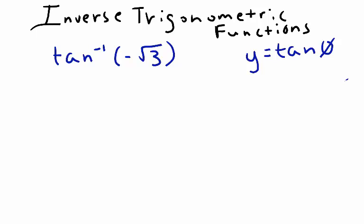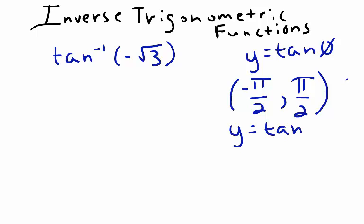So what we have to do is we have to work with just a portion of y equals tangent of theta, and by restricting y equals tangent of theta to a particular interval, we can say that tangent of theta is one-to-one for that interval. If we use the interval negative pi over 2 to positive pi over 2, within this interval, y equals tangent of theta is one-to-one.